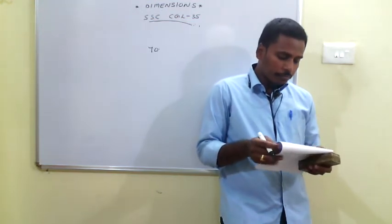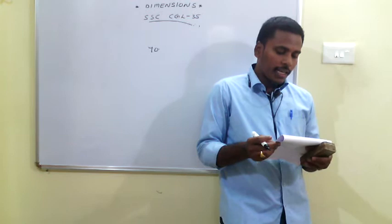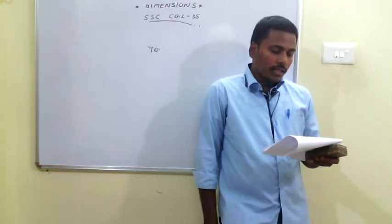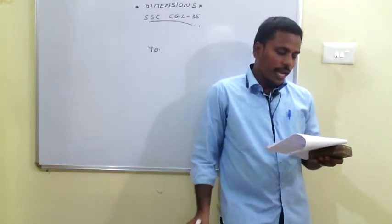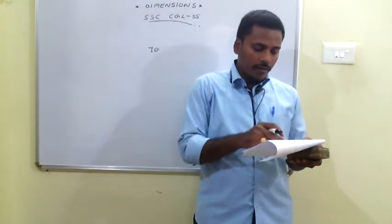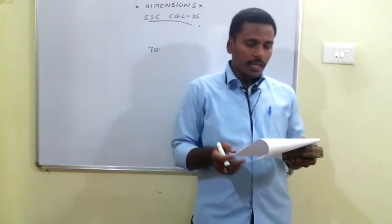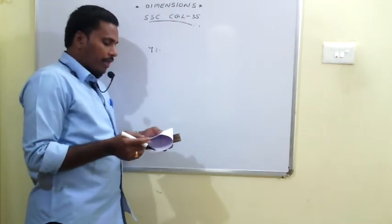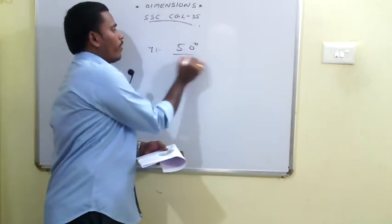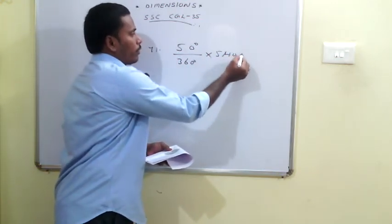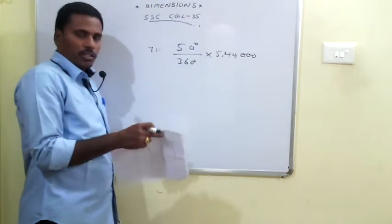Problems 71 to 75 use a pie diagram showing total expenditure of 5,40,000 on constructing a flat. The categories and their degree values are: labour 100°, timber 90°, cement 75°, bricks 50°, and steel 45°. For the 71st problem, expenditure on bricks = (50/360) × 5,40,000 = 75,000.